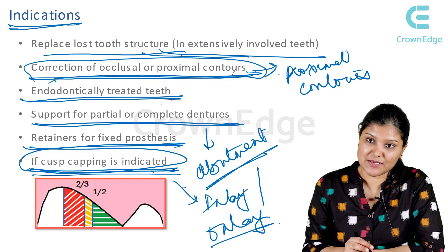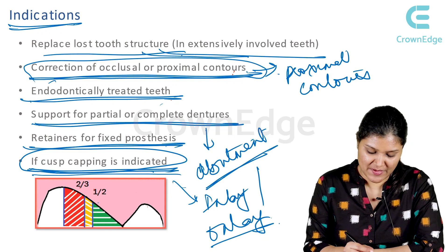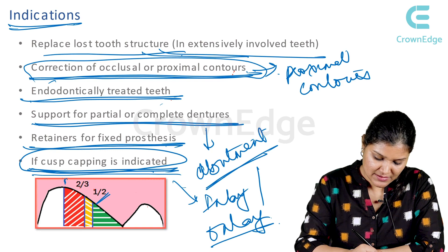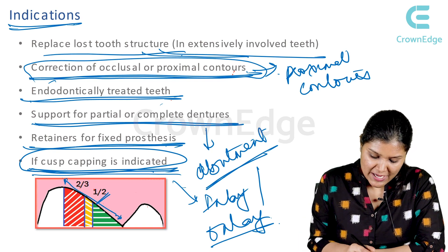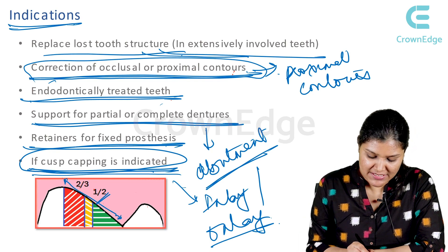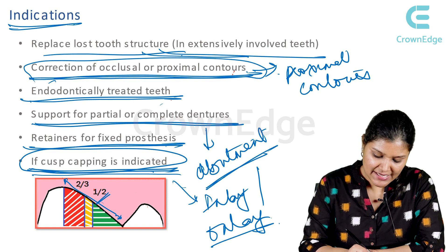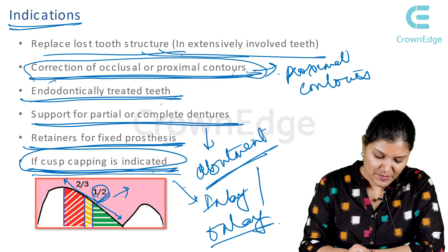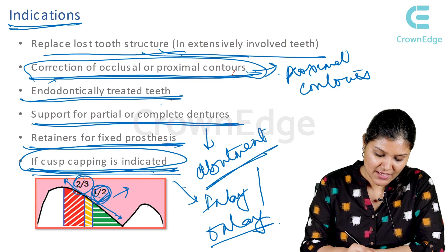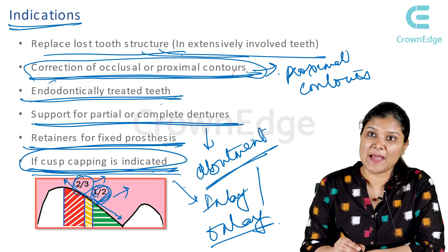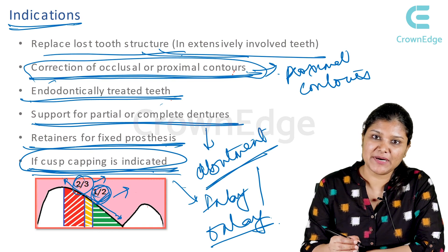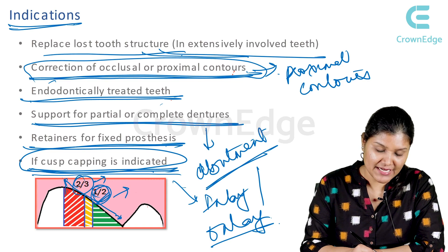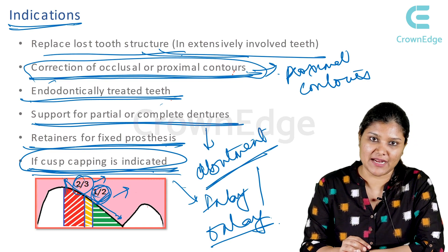There is a principle followed for cusp capping. If only half of the intercuspal distance is involved, then cusp capping is not required. If it's between half to two-thirds, cusp capping can be considered but it is up to the clinician's discretion. If it's beyond two-thirds, then cusp capping is indicated.